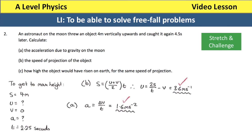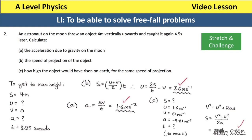For part C: how high would the object have risen on Earth for the same speed of projection? Now A is minus 9.81 because it's moving upwards against gravity. The speed of projection is 3.6 metres per second, the speed at maximum height is 0. Using V squared equals U squared plus 2AS and rearranging for S — subtracting U squared and dividing by 2A — and substituting the values in gives an answer of 0.66 metres. I hope you found this video useful; you will definitely get a free fall problem like this in your exams.